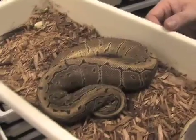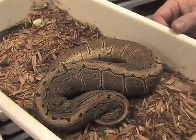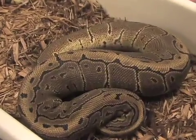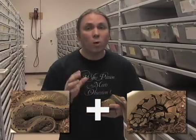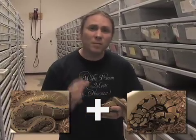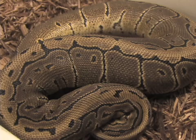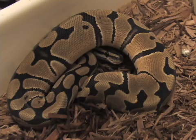So what we have here is a pinstripe ball python. This is one of the most simple genetic animals we work with — it's called a codominant. If you take a pinstripe ball python and breed it to a normal ball python, 50% of the babies are gonna turn out pinstripe and 50% are gonna turn out normal on average. Pretty much as simple as you get.